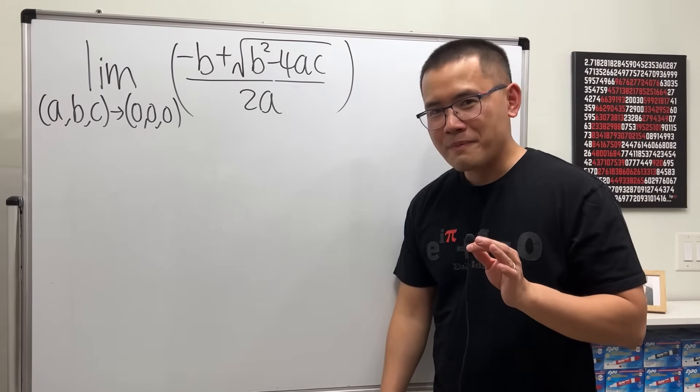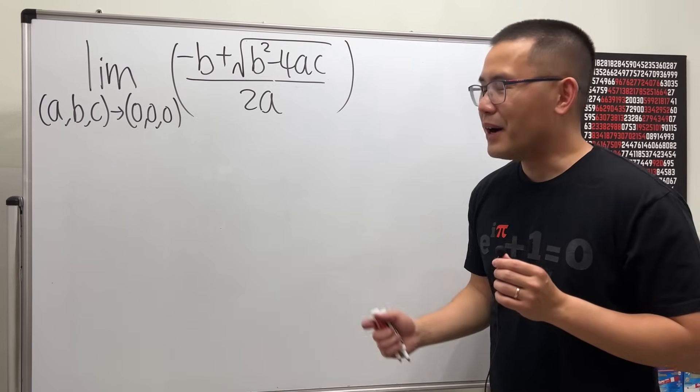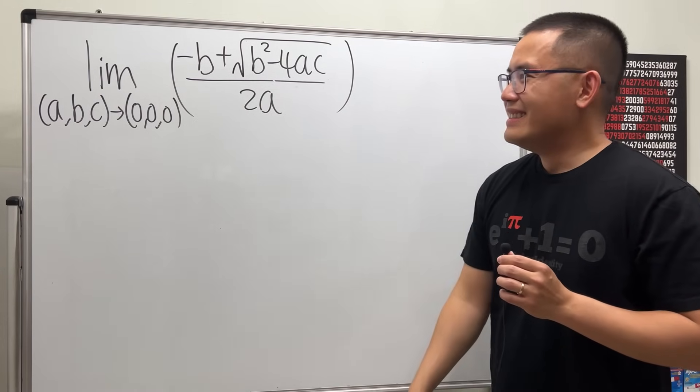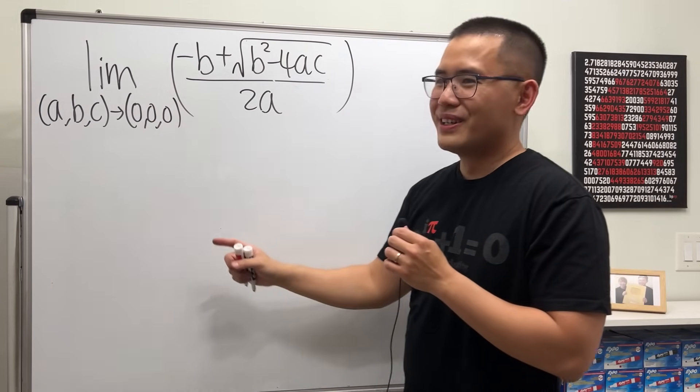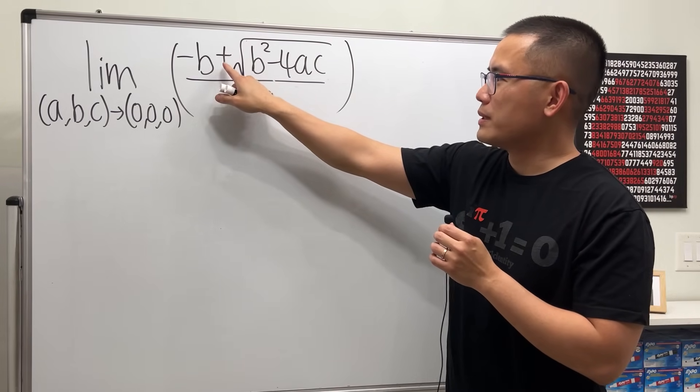Okay, I know what you guys are thinking, I cannot believe this either. Finally, Calculus 3, and also with the quadratic formula. We are going to evaluate the limit as a, b, c go to zero, zero, zero. And here we have the quadratic formula. Notice I'm just going to deal with the plus version here.